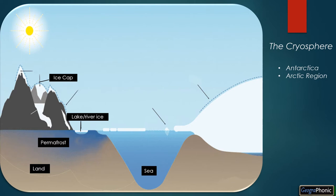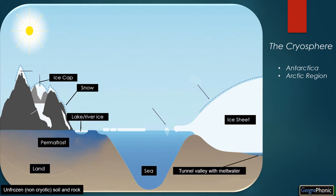We see unfrozen non-cryotic soil and rock, ice sheets, and snow. Here we have a tunnel valley with meltwater, an iceberg, sea ice, ice cap, ice shelf, and snow.